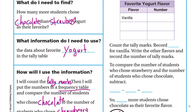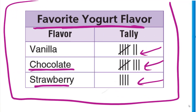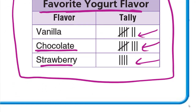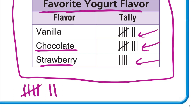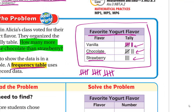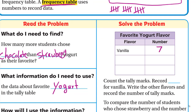Let's see how we count tally marks. One, two, three, four — the fifth one we draw across like this, so a group of five looks like this. Continuing: six, seven, eight, nine, ten; the next group of five, and so on. For vanilla, we count: one, two, three, four, five, six, seven — so vanilla has seven students.